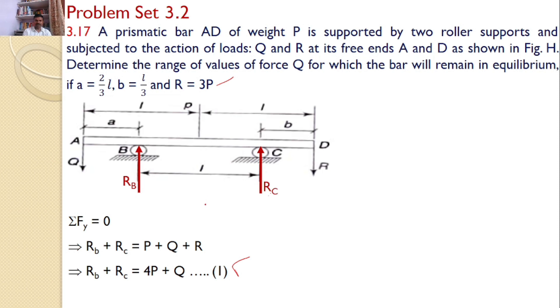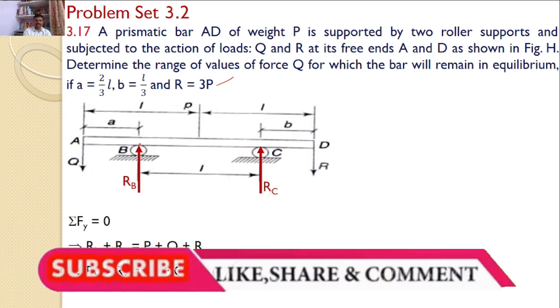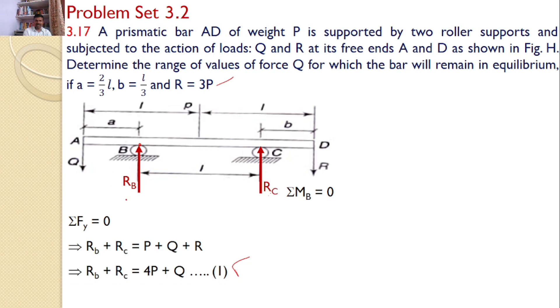Take moments about point B. RB will not introduce any moment. Q will introduce a moment in the counterclockwise direction. Since P is the self-weight acting downward, this will create a clockwise moment.